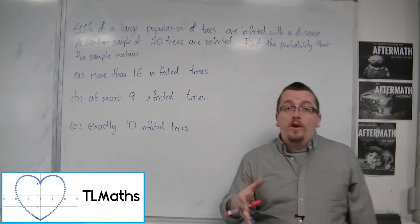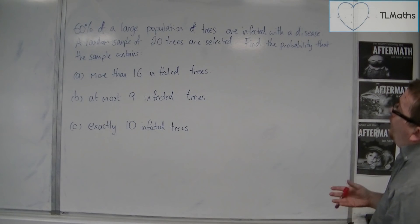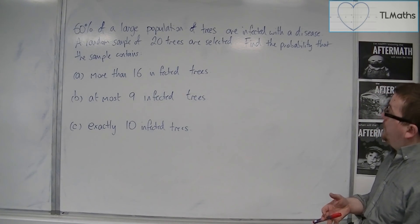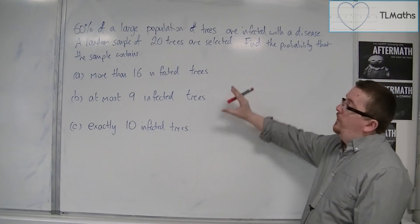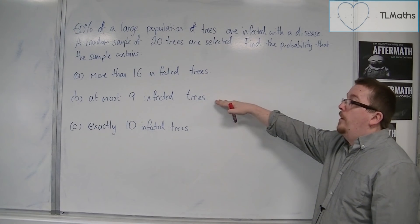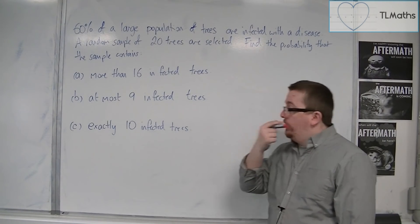In this video we're going to look at a worded problem. 60% of a large population of trees are infected with a disease. A random sample of 20 trees are selected. Find the probability that the sample contains: firstly, more than 16 infected trees; then part B, at most 9 infected trees; and then C, exactly 10 infected trees.